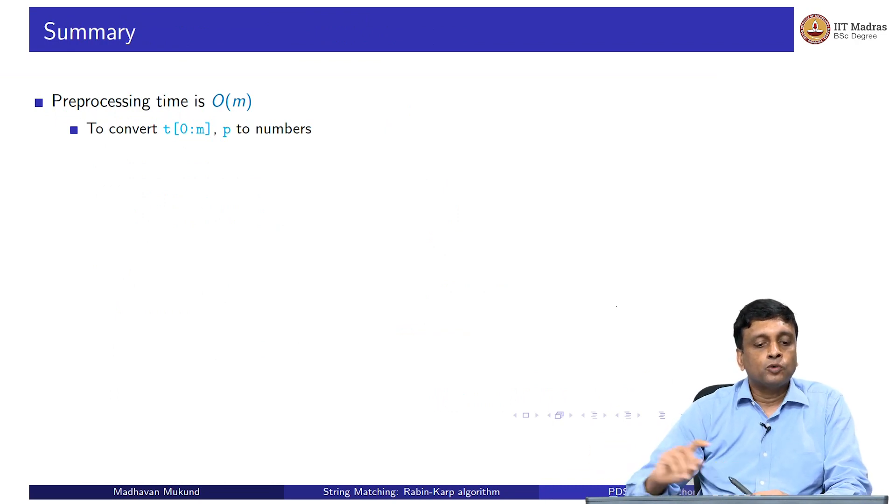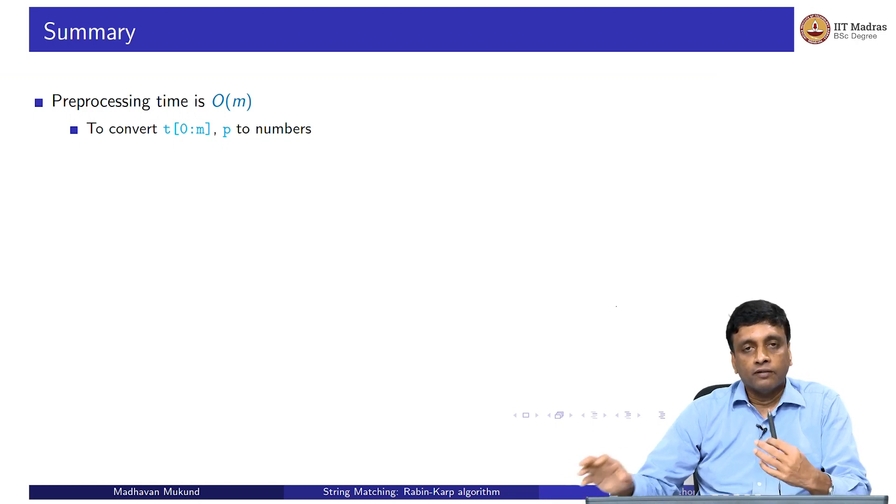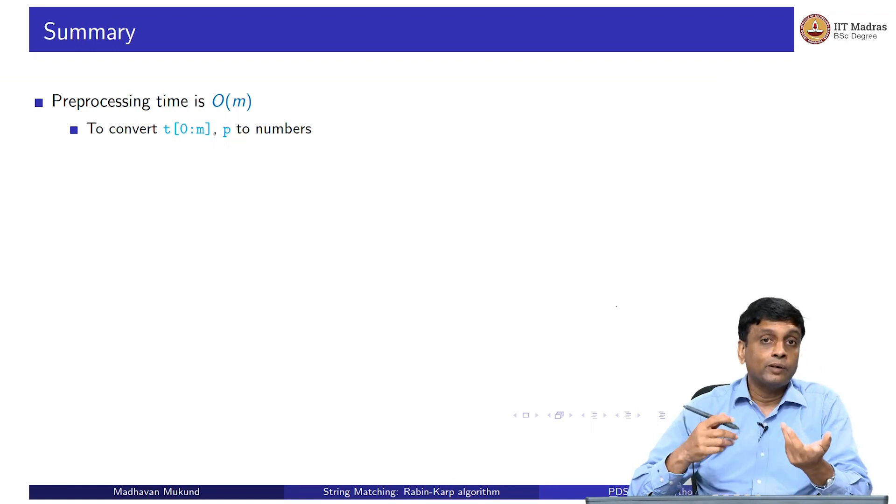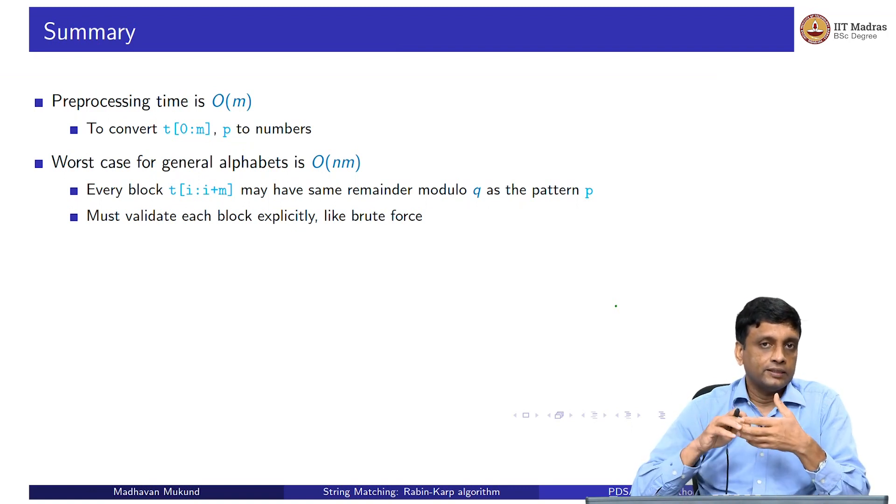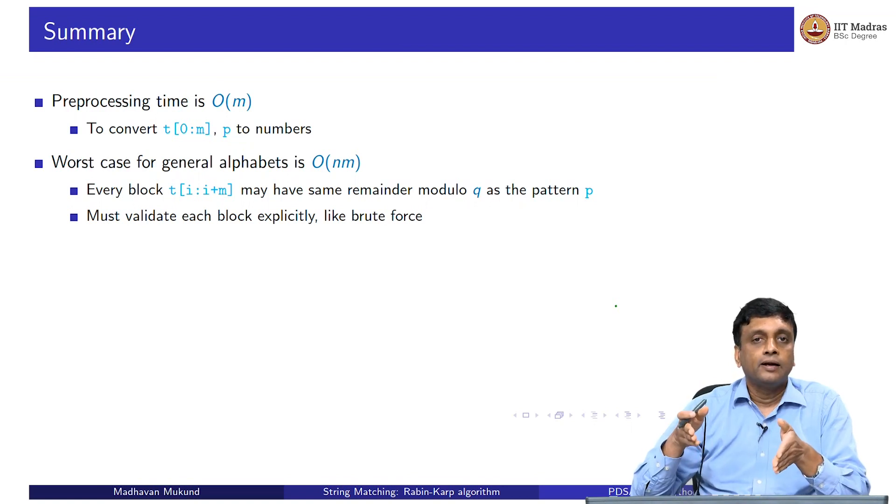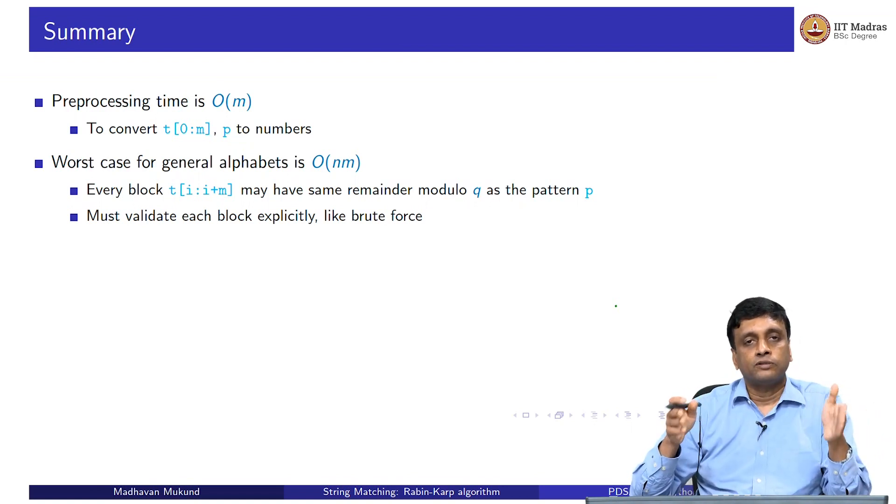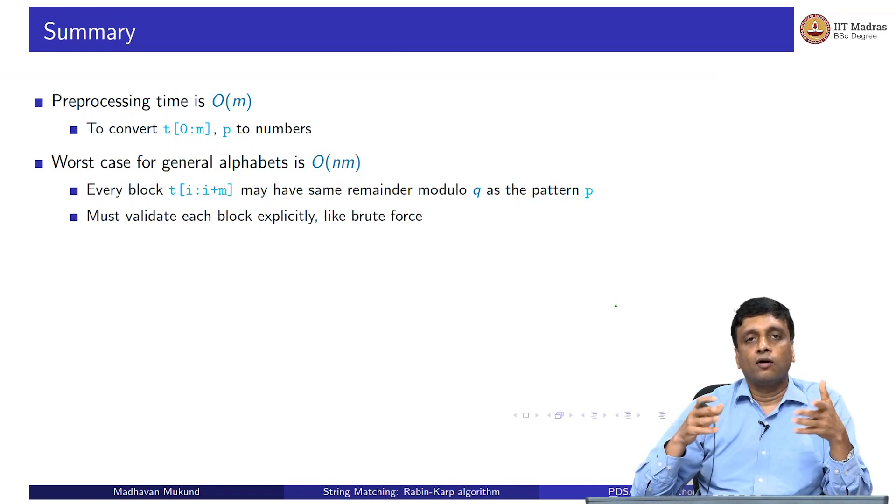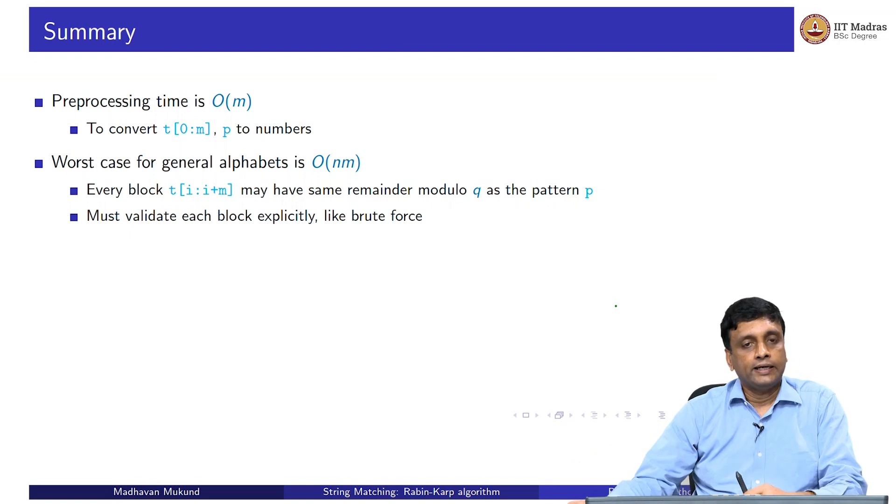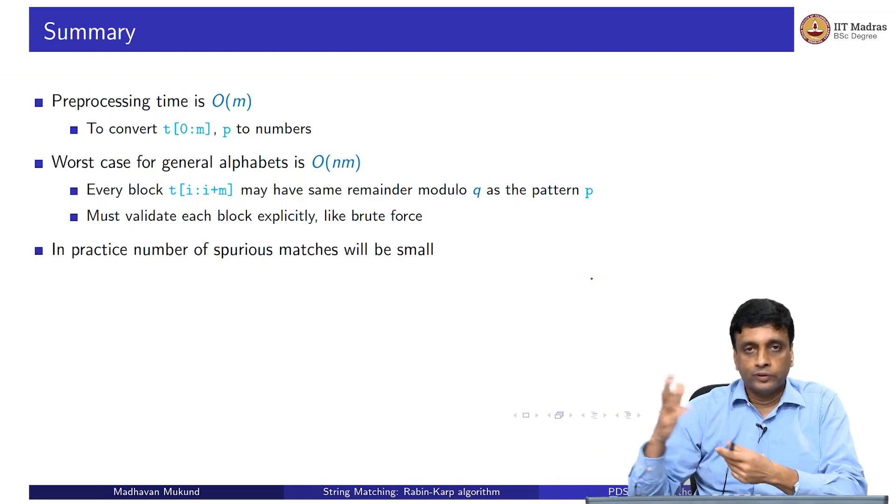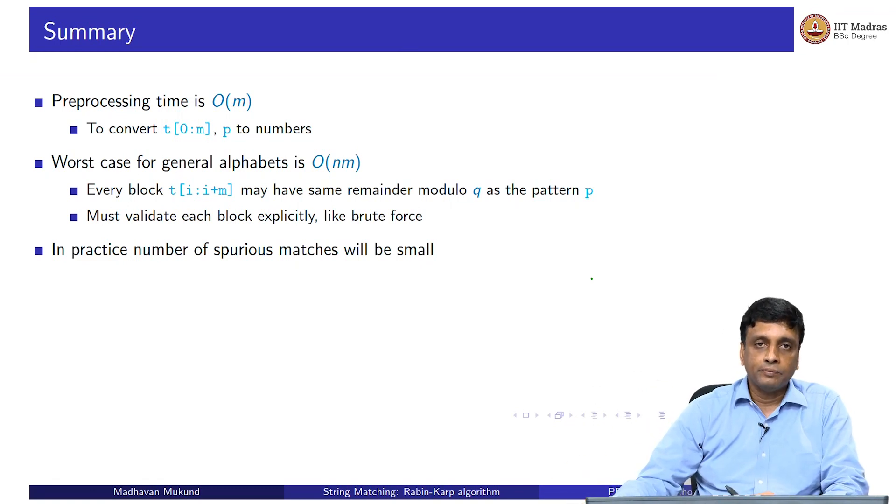As we saw, the preprocessing time is proportional to the length of the pattern, because we just have to convert this into an m-digit number. If we are doing it modulo q, then it is an m-digit number modulo q. On the other hand, we could have a lot of these collisions. Every time we have a collision, that is every time the block reports a remainder which is the same as my number, I have to go and check it. I have to do a linear scan or I have to do this order m work to convert it to a number and check numerically. Whatever it is, I have to do order m work to validate whether this positive is a false positive or a true positive. I could cook up the numbers in such a way that a large number happen to have the same remainder. I could for almost all the positions end up having to do the scan, which results in a worst case of n times m. Of course, in practice, it will be very unusual that you will get such a large number of matches which have the same remainder.